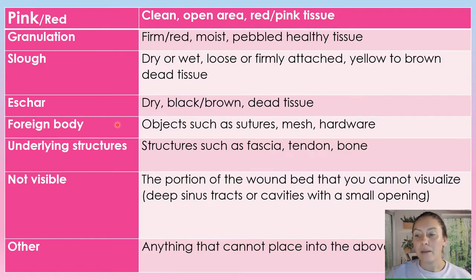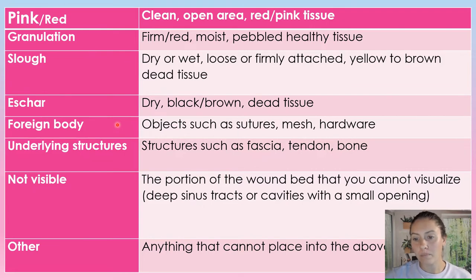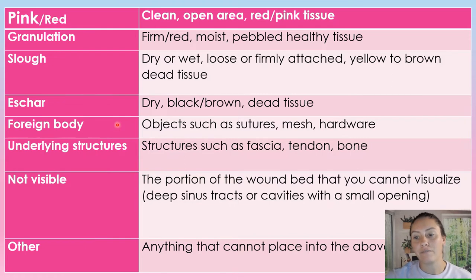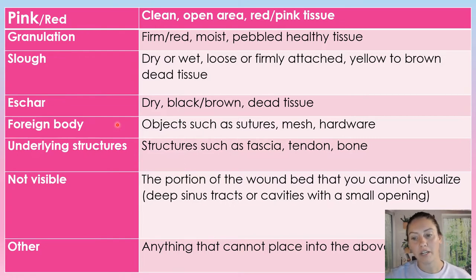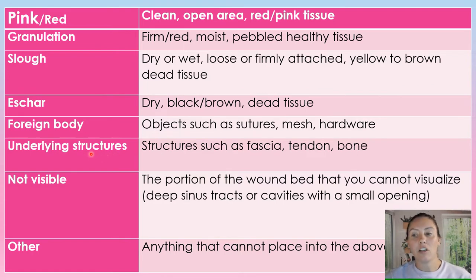We can also have foreign bodies. This is either structures, hardware, meshes — anything that's under the skin that was placed there surgically. You can also have different foreign bodies if the patient was impaled by something and there's something under the skin that you can see in the wound bed.